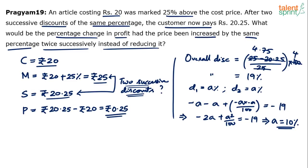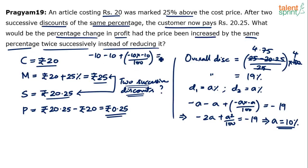This can also be done mentally: overall discount is 19%, so each discount is around 9.5%, making 10% the best guess. You can verify with trial and error, or solve the quadratic equation. Either way, A equals 10%. In the original case: 25 minus 10% gives 22.5, then 22.5 minus 10% of 22.5 (which is 2.25) gives 20.25 — confirmed.